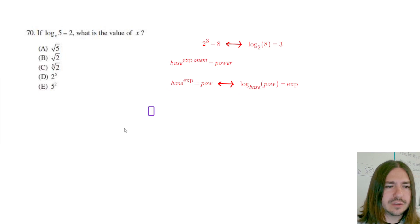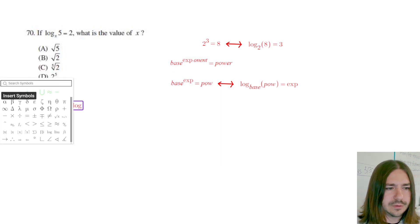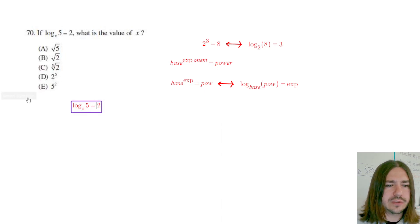So in this equation, we've got log base x of 5 equals 2. So in this case, 5 is the power, 2 is the exponent.